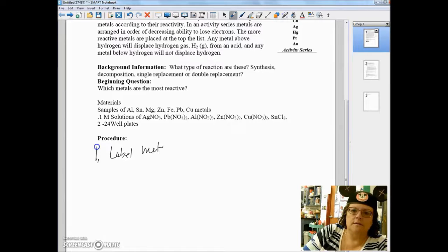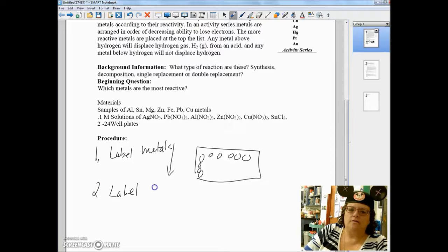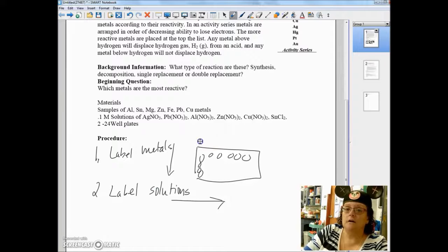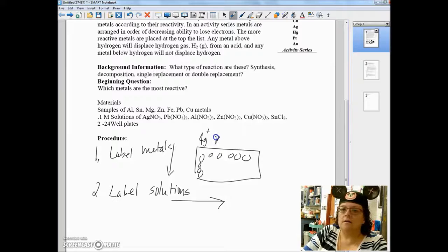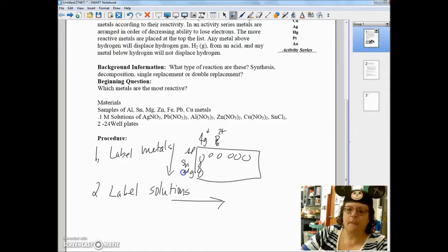So step one: label metals going down on your well plate. And then step two: label the solutions. Or you can just put the cations if you want to going across. So we'll have AG and lead nitrate and so on and so forth. And going down, aluminum and tin and magnesium. Lots of fun.